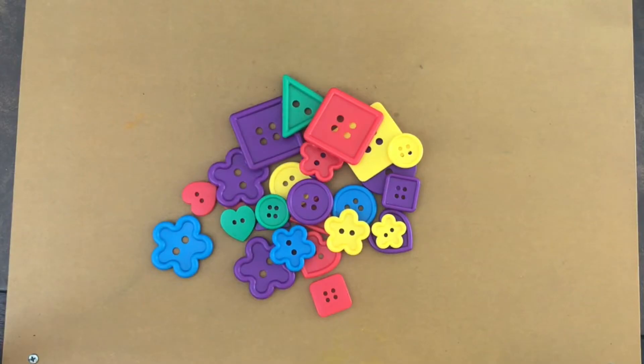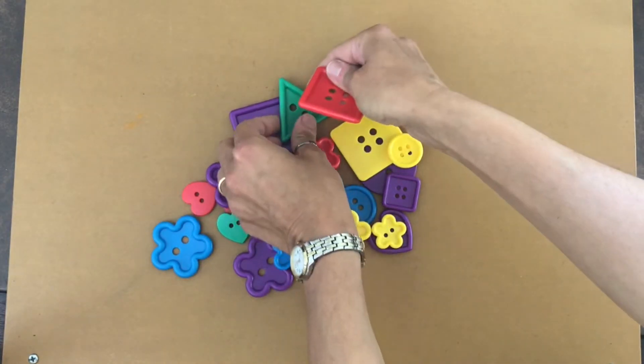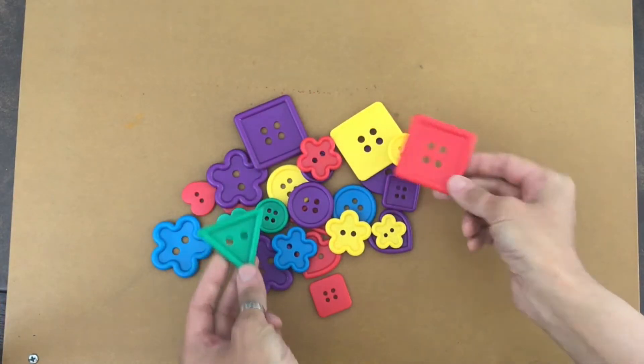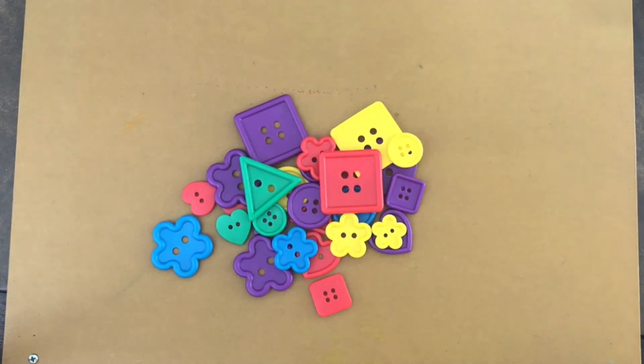So the first thing I'm gonna look at these buttons and I see that they're different colors and I see that there are different number of holes on each button and I see that there are a bunch of different shapes. So let's try to sort them.